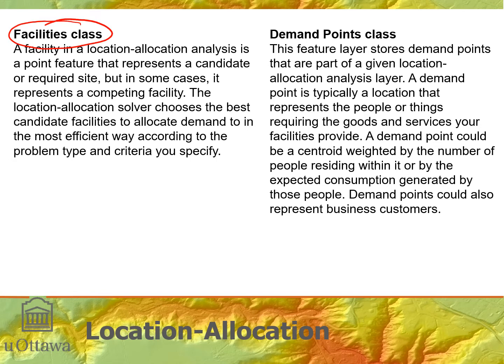We have two key concepts here. First, facilities: these are the locations in space that compete. There is a set of competing candidate locations, and the location allocation algorithm will choose the best ones to allocate demand to in the most efficient way — minimizing travel time and maximizing total population served. The facilities class holds candidate locations, which could be locations for a new store, with customer demographics as the demand locations.